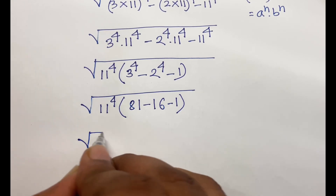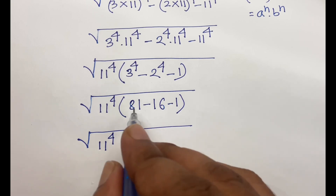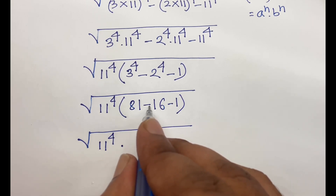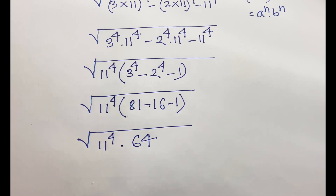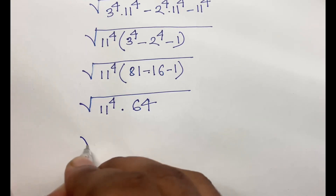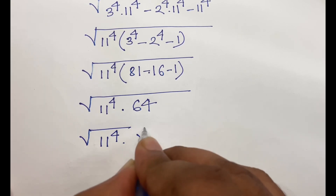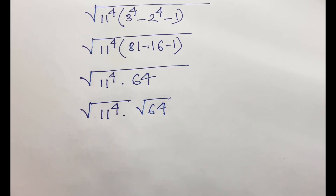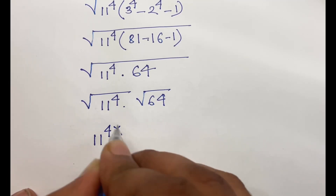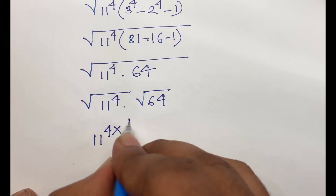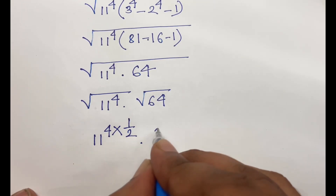So we have square root of 11 to the power 4 times (81 minus 16 minus 1), which equals 64. Then we can write this as square root of 11 to the power 4 times square root of 64. The square root of 64 is 8.